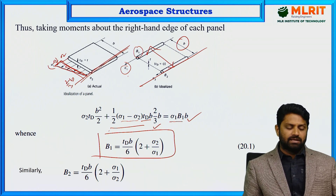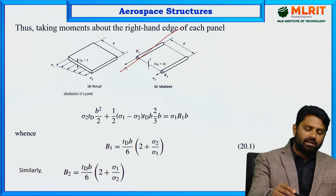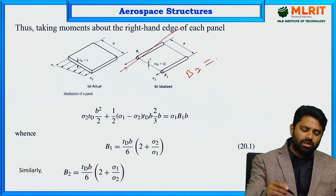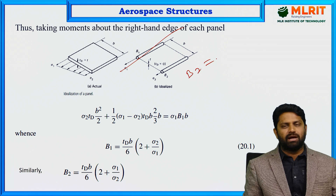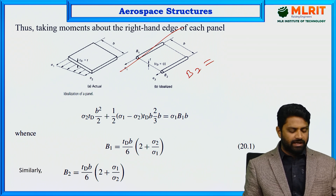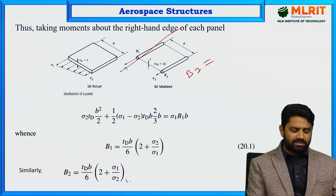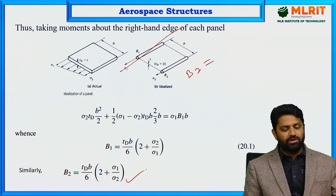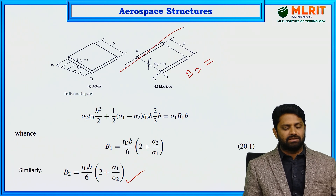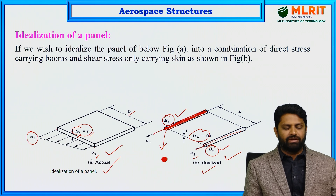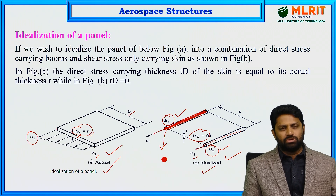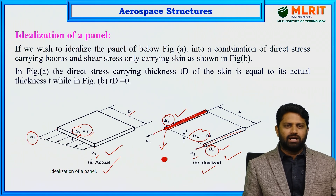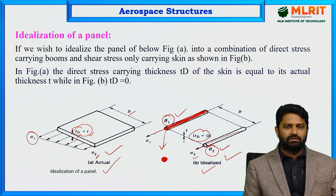Similarly, taking the moment about the left-hand edge of the panel, we can calculate B2, which is given by: B2 = (td × B / 6) × (2 + sigma 1 / sigma 2). This is how we calculate the boom areas using the idealization of a panel. Thank you everyone for watching, and we will meet in the next session in this unit.